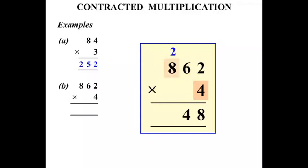4 times 8 is 32 plus 2 is 34. Okay, and since there's no other calculation let's write the 34 down now. So our answer there is 3448.